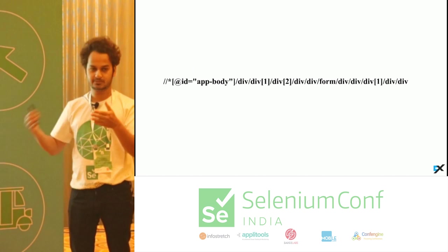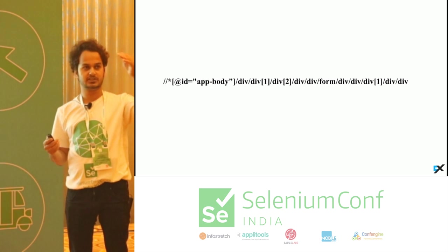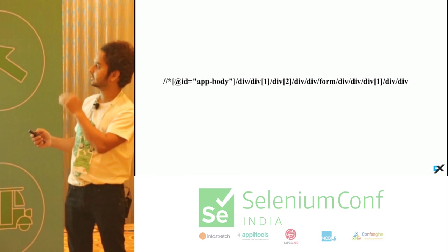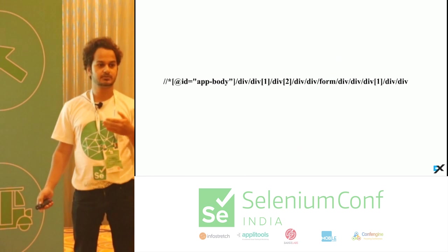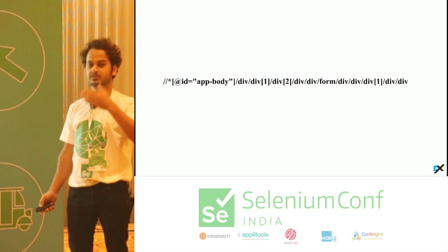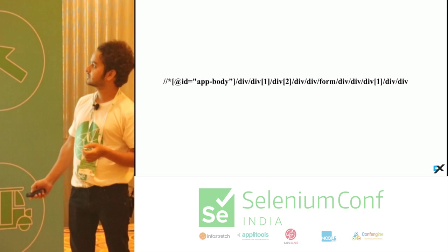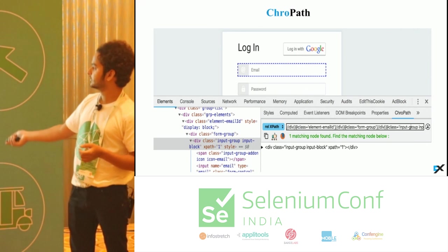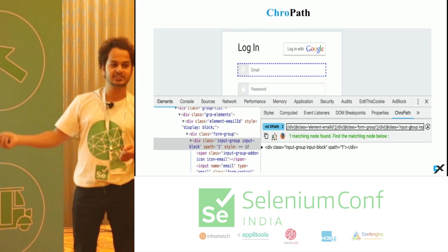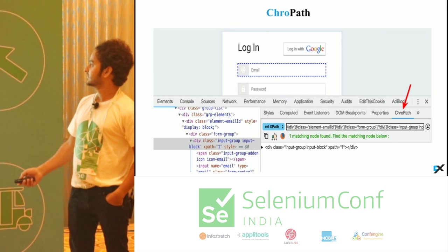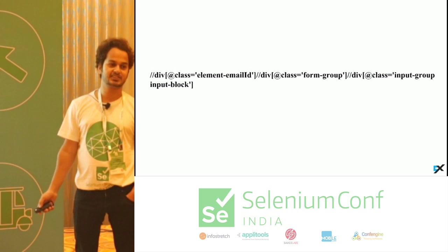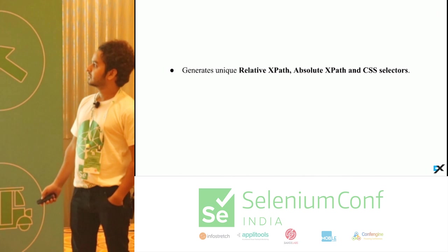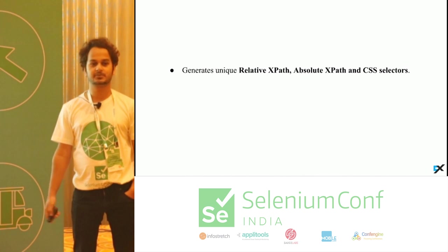There will be multiple locators in our script that all need to be updated with the indexes. Or else we will be writing our own relative XPath — a robust one, with respect to the parent and all. So how does Kropath solve this problem? With Kropath, you just click on that DOM node or inspect the element, it gives you the relative XPath, and a copy button is there. In a single click you get the relative XPath, which doesn't have any indexes and can be used directly in your script.